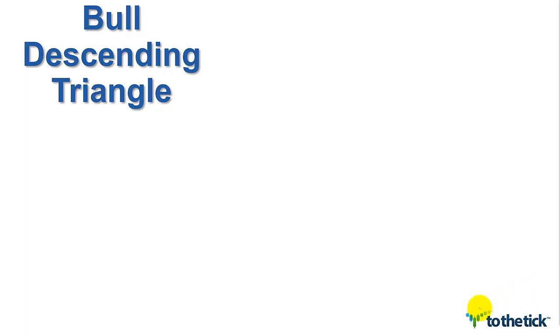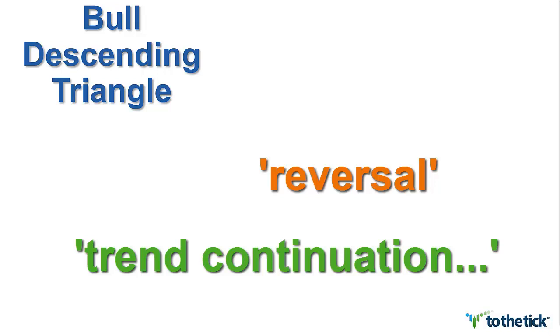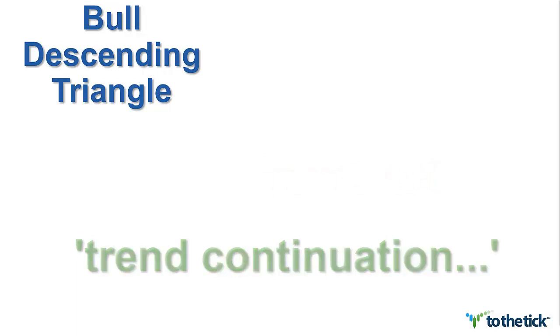Welcome to this tutorial brought to you by To The Tick and today's topic is the bullish descending triangle. Bullish descending triangles can be seen in two main areas within market structure, trend continuation and as a reversal. Today we will focus on recognizing the descending triangle, what it looks like and then how to trade the trend continuation setup.